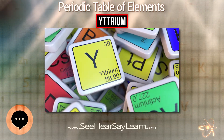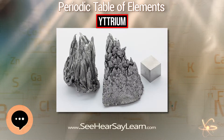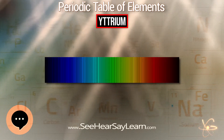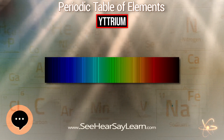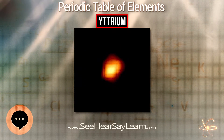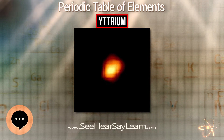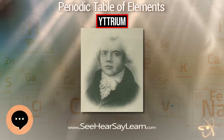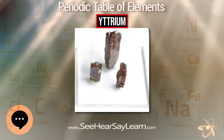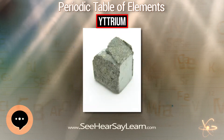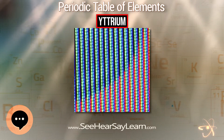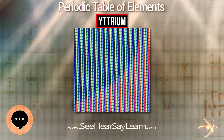In 1787, army lieutenant and part-time chemist Carl Axel Arrhenius found a heavy black rock in an old quarry near the Swedish village of Ytterby. Thinking it was an unknown mineral containing the newly discovered element tungsten, he named it ytterbite and sent samples to various chemists for analysis. Johann Gadolin at the University of Åbo identified a new oxide in Arrhenius's sample in 1789 and published his completed analysis in 1794. Anders Gustav Ekeberg confirmed the identification in 1797 and named the new oxide yttria.